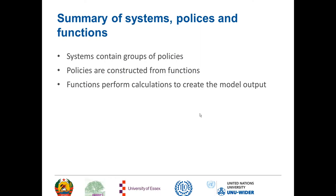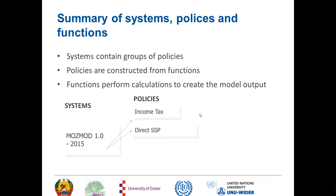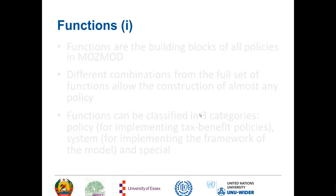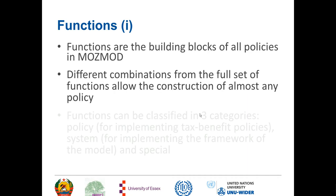We can show all of this diagrammatically. In MosMod version 1.0, there is one system — the 2015 system. Then there are policies, such as an income tax policy, direct social support programme, basic social support programme, and indirect taxes including value-added tax. Then we have functions — for example, the direct SSP contains eligibility tests and calculations to calculate amounts. Functions are the building blocks of all policies in MosMod, and different combinations from the full set of functions allow the construction of almost any policy.